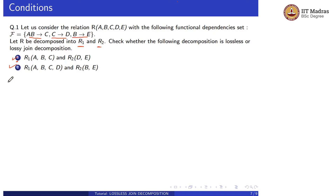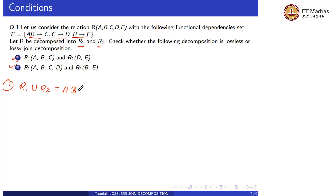Let us check the first decomposition. R1 union R2 equals A, B, C, D, E which equals R. So our first condition is satisfied: R1 union R2 equals R.